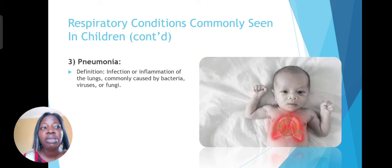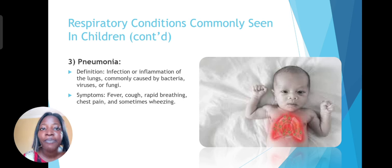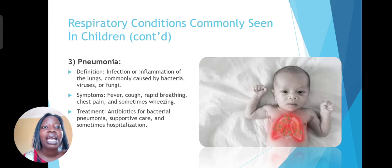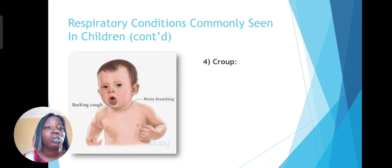The next one is pneumonia, which is inflammation of the lungs caused by virus, bacteria, or fungi. Symptoms include fever, cough, rapid breathing, chest pain, and sometimes wheezing, and it's more difficult in younger children. Antibiotics are used for bacterial pneumonia, along with supportive care, and sometimes hospitalization is needed.